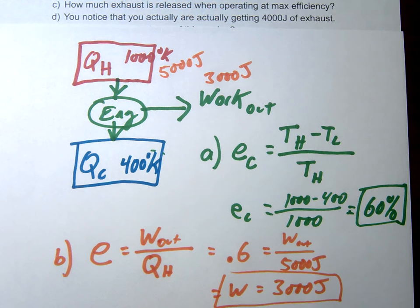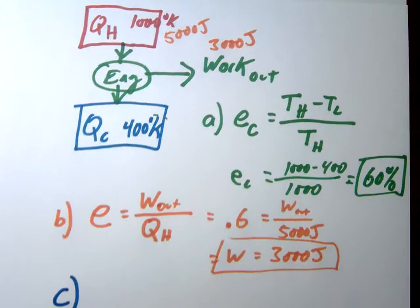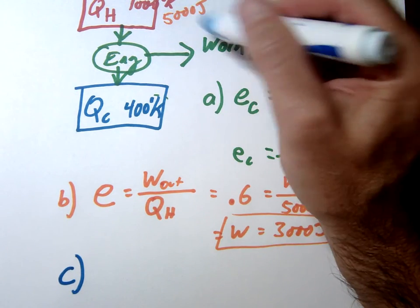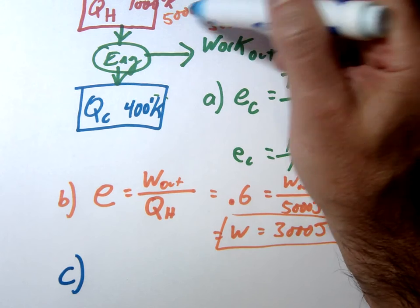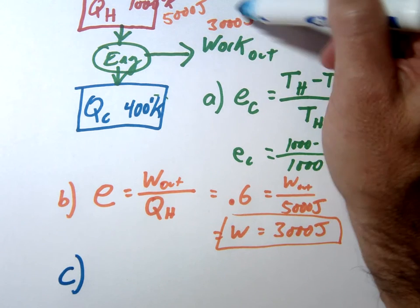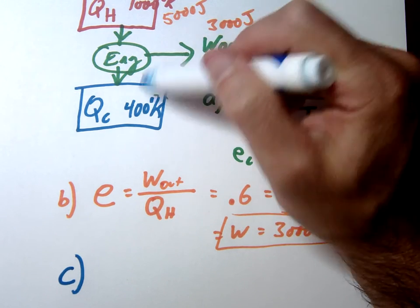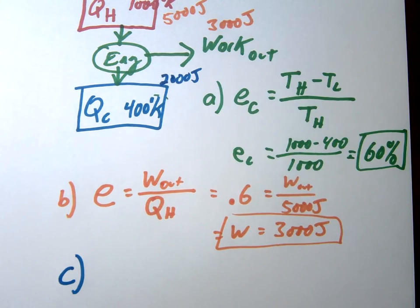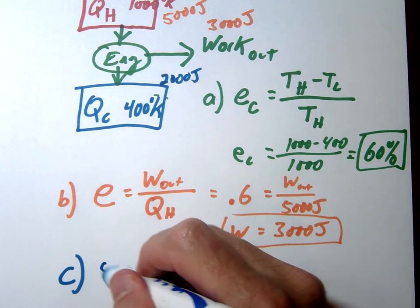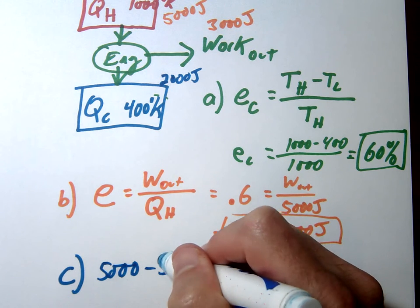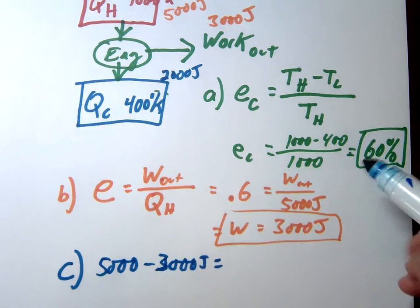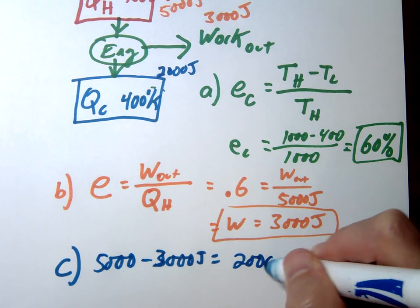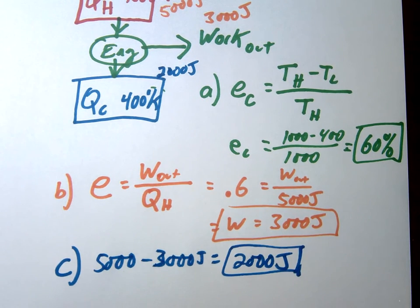So notice when we take a look at letter C here, letter C is saying, well, how much is going into that cold reservoir? Well, take a look here. You don't even really have to do complex math here. You started with 5,000, you ended with 3,000. That means to conserve energy, you must have had 2,000 going into this exhaust. We call it exhaust usually, or cold temperature reservoir. So the math here is just a simple 5,000 minus 3,000. So you're going to get 2,000 joules of exhaust.